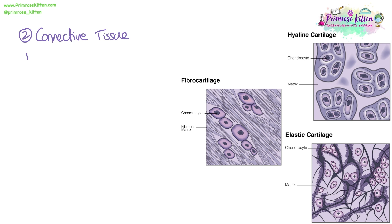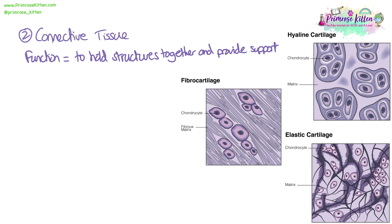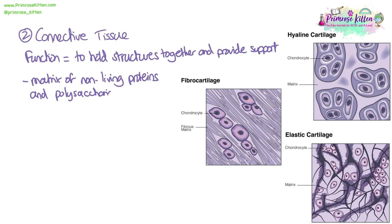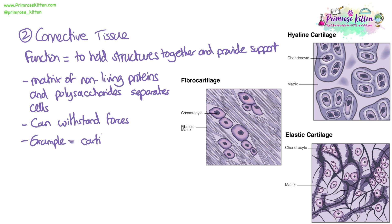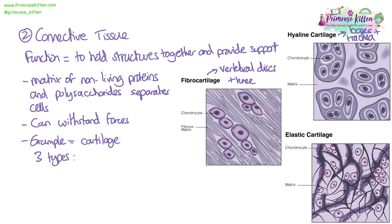Connective tissue. The function of connective tissue is to hold structures together and provide support. The features of this tissue are that it is mostly made of a matrix of non-living proteins and polysaccharides, which separates the cells and gives the tissue its unique properties. Connective tissue can withstand forces such as weight. An example is cartilage: hyaline cartilage is often connected to bones and forms things like the trachea and larynx; fibrocartilage is found between the vertebrae making up intervertebral discs and also around the kneecap; and elastic cartilage forms the outer structure of the ear and the epiglottis.